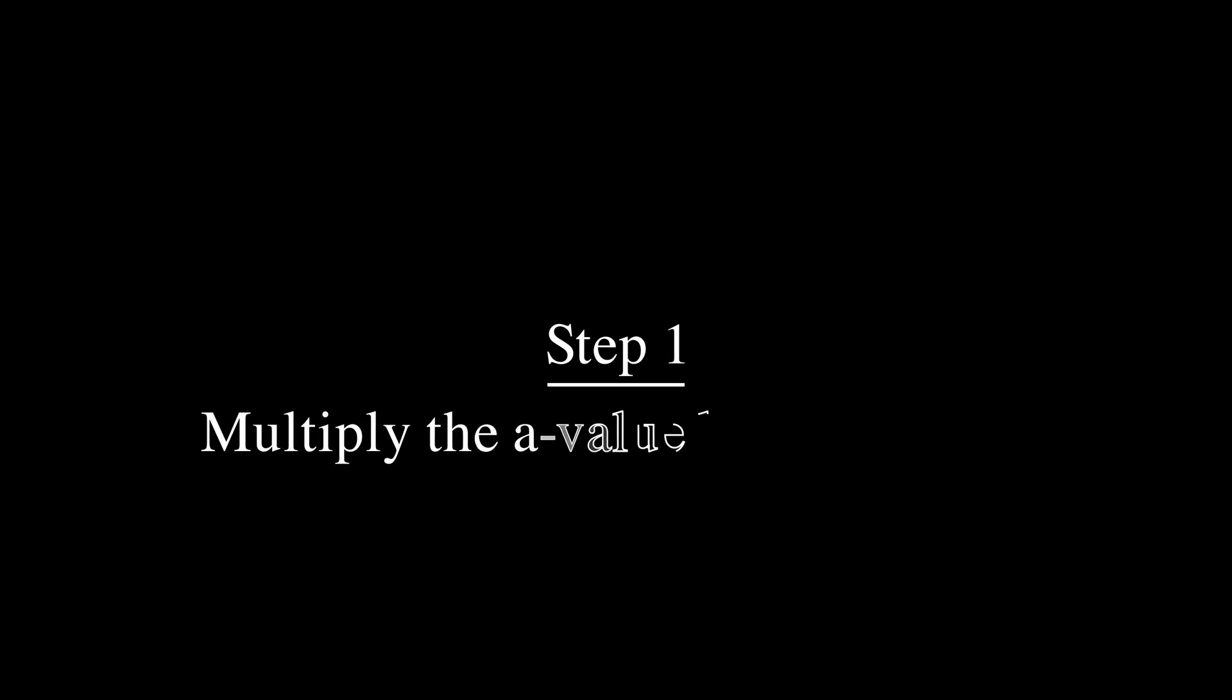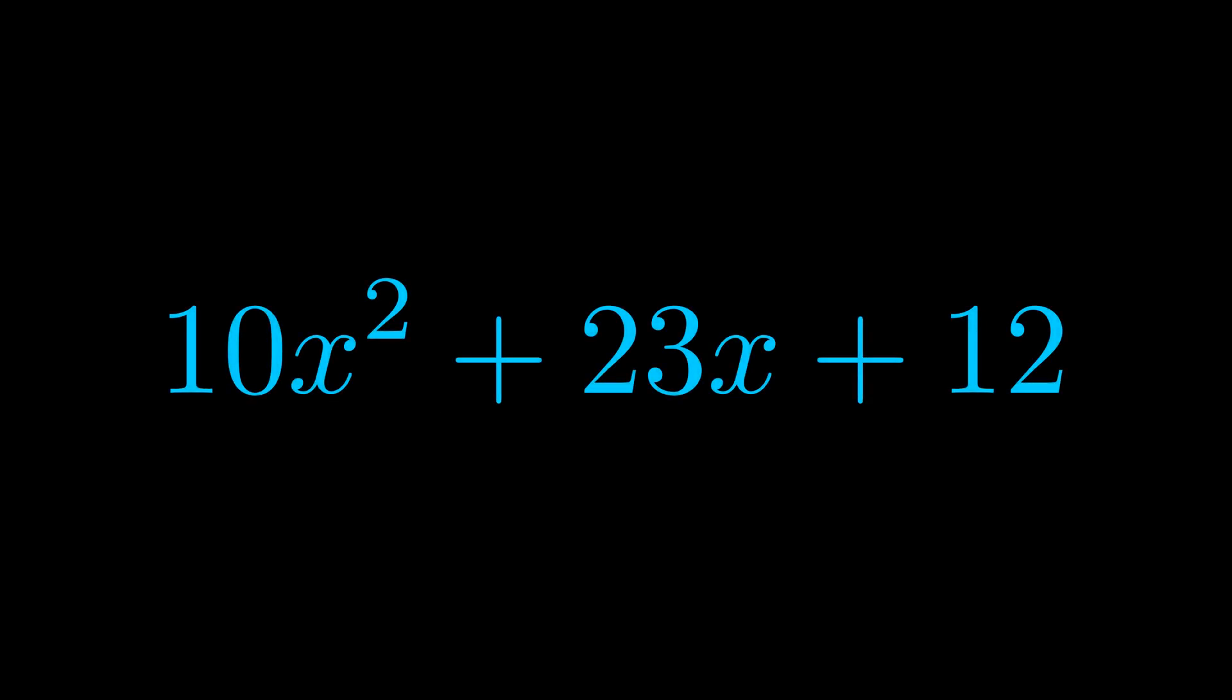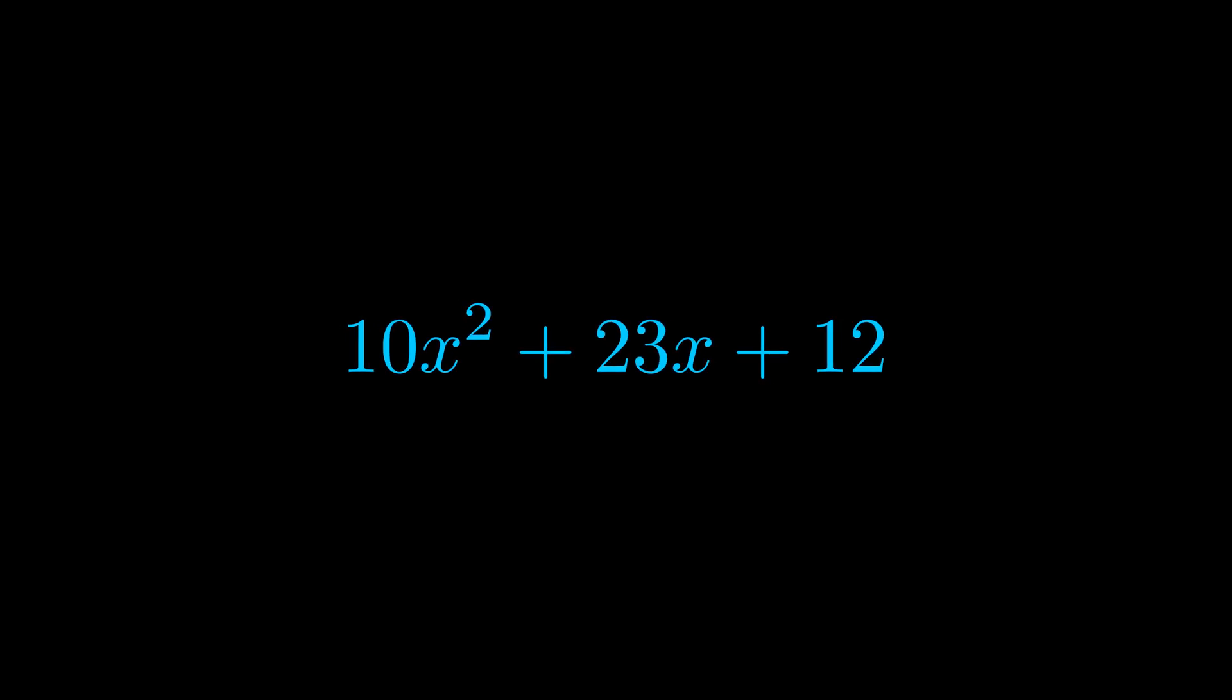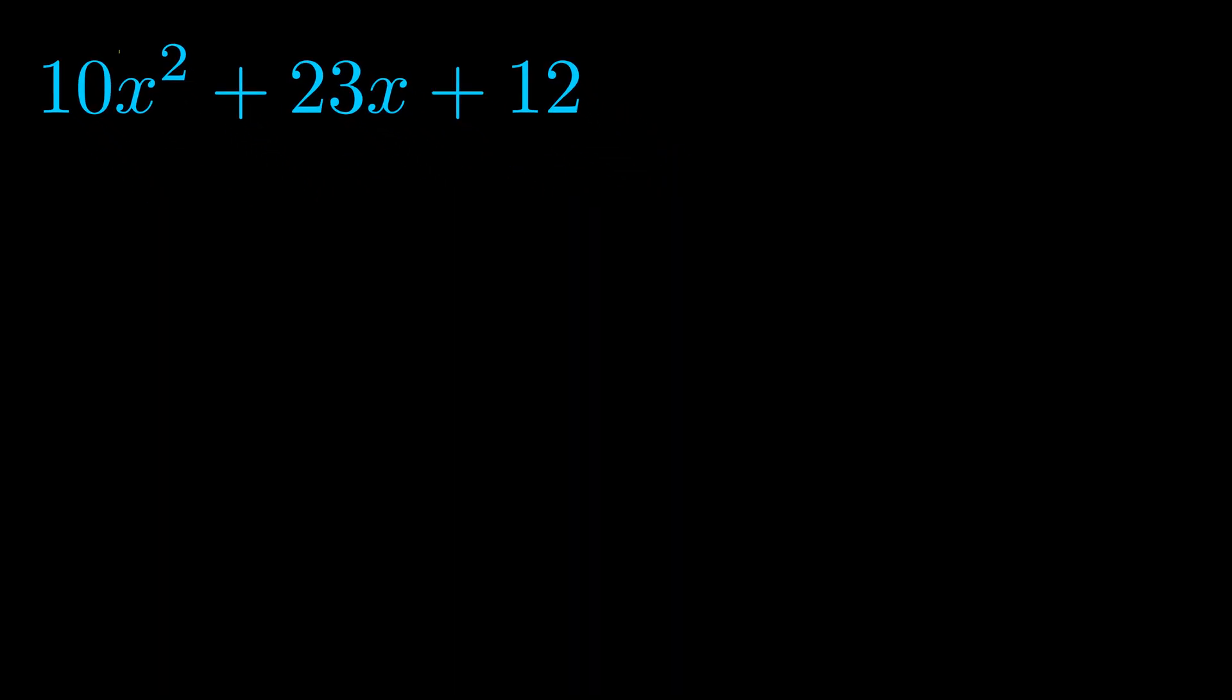Step one when factoring an equation of this form is to multiply the a value by the c value. Here we can see that our a value is the coefficient on the x squared term and our c value is the constant term.